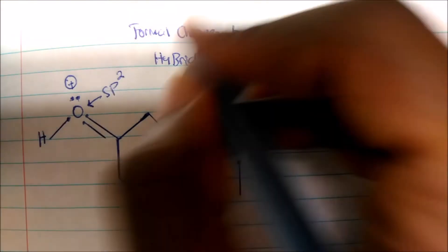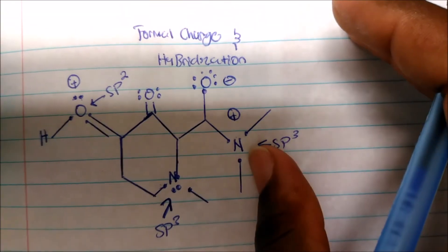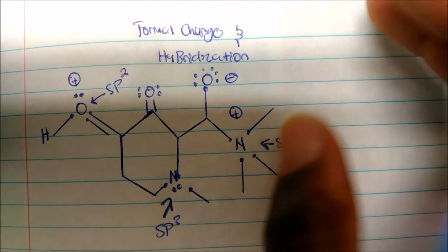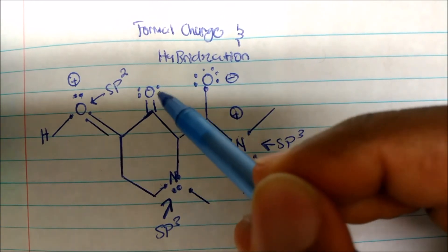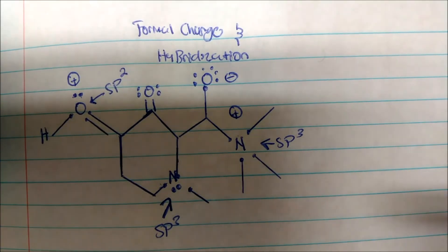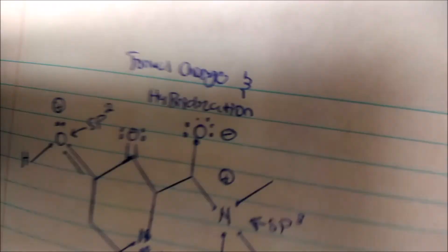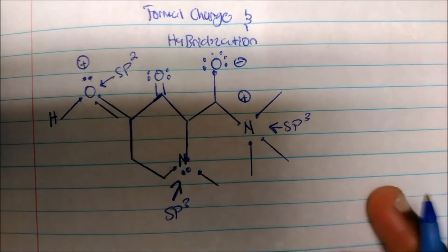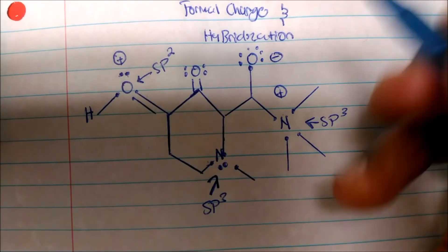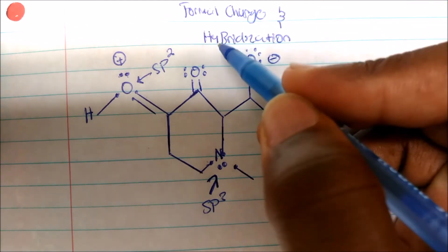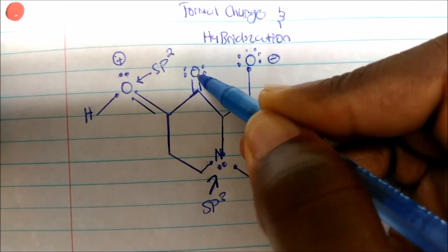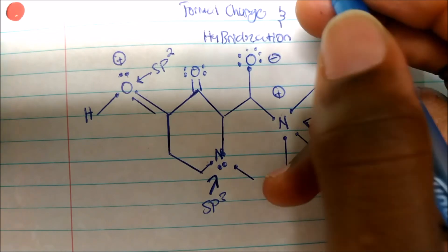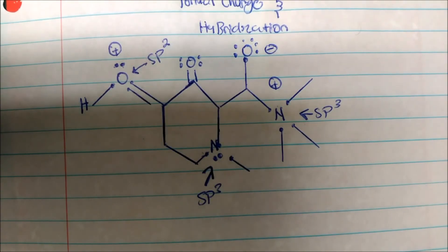And just for practice, let's put a double-bonded oxygen here. What would be the formal charge of this oxygen? It would be zero, because — one, two, three, four, five, six — six minus six is zero. So that's all we have to talk about in terms of formal charge.